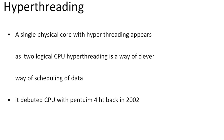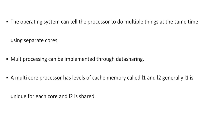Hyper-threading is a technology used by Intel processors in which the OS treats a single core like two virtual cores, speeding up the process so the processor is never idle. In a multi-core processor, the operating system can direct the processor to do multiple things at the same time using separate cores.